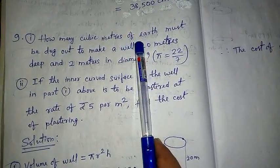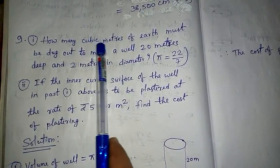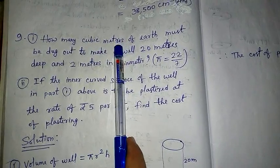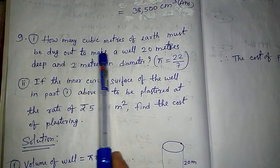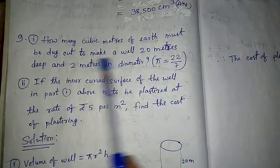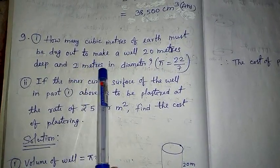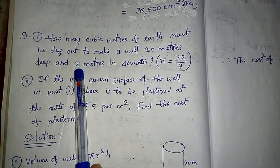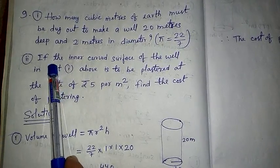Moving on to the next question: how many cubic meters of earth must be dug out? Since cubic meter is used for volume, we need to find volume. The earth dug out is in cylindrical shape — a well whose depth is 20 meter. That depth is the height of the cylinder, and the diameter is 2 meter. Dividing by 2, radius = 1 meter. So height = 20 meter and radius = 1 meter.